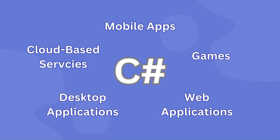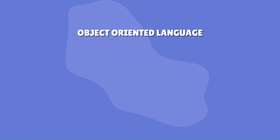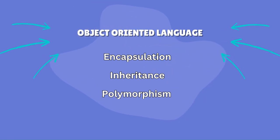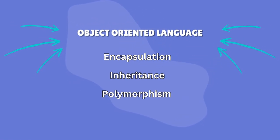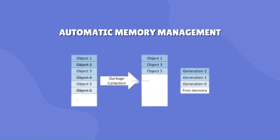Some key features and characteristics of C# worth mentioning are the following. C# is an object-oriented programming language, which means it supports the principles of encapsulation, inheritance and polymorphism. This allows developers to create modular and reusable code. C# also includes automatic memory management through garbage collection, which helps developers avoid memory leaks and manage memory efficiently.